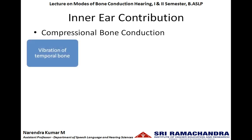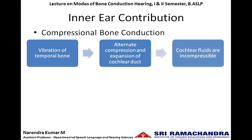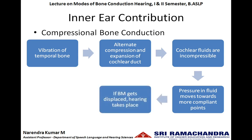Whenever the temporal bone is set into vibration, there is an alternating compression and expansion of the cochlear duct. The cochlear duct has cochlear fluids which are incompressible in nature; hence these fluids, because of pressure changes, need to move towards easily movable or most compliant points. There are two such compliant points in the cochlear duct: the oval window and the round window.